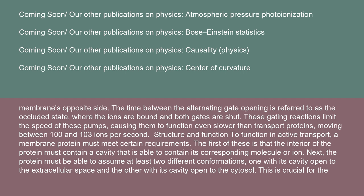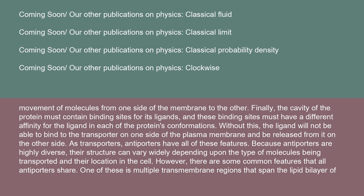To function in active transport, a membrane protein must meet certain requirements. The interior must contain a cavity able to hold its corresponding molecule or ion. The protein must assume at least two different conformations — one with its cavity open to the extracellular space and the other open to the cytosol. Finally, the cavity must contain binding sites for its ligands with different affinities in each conformation, so the ligand can bind on one side and be released on the other. As transporters, antiporters have all of these features.